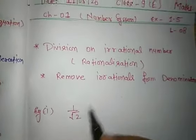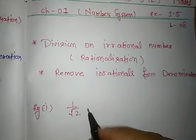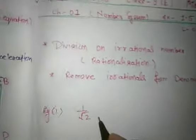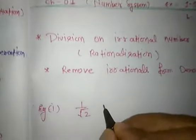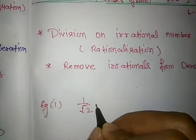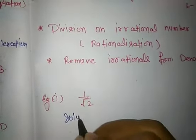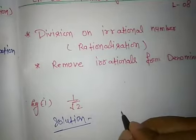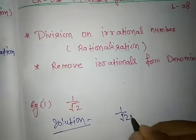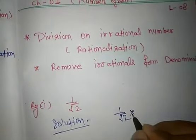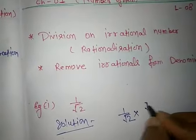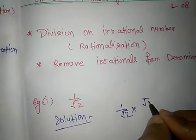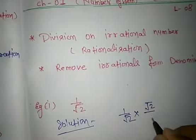Take a simple example: 1 by root 2. To convert this, first write the given value and multiply both numerator and denominator by root 2.